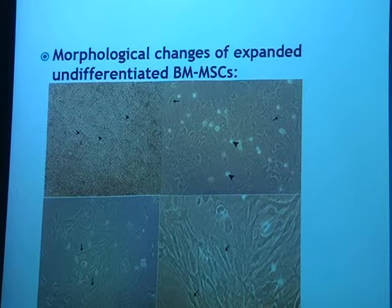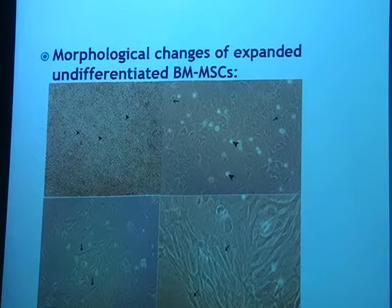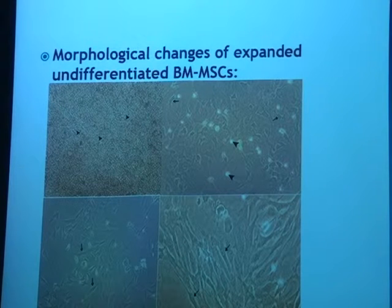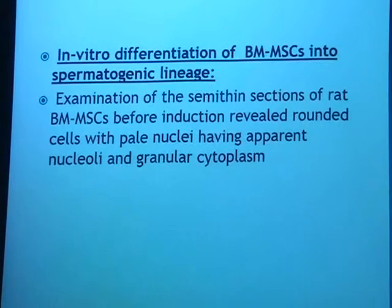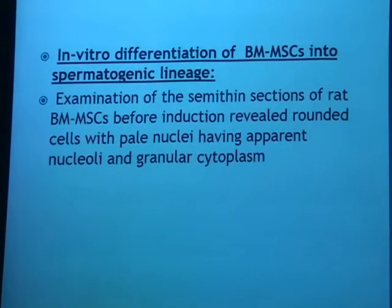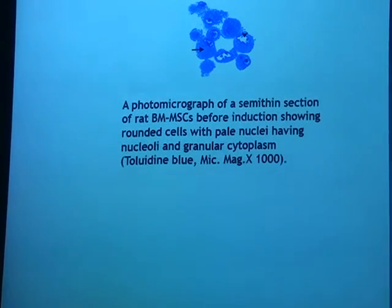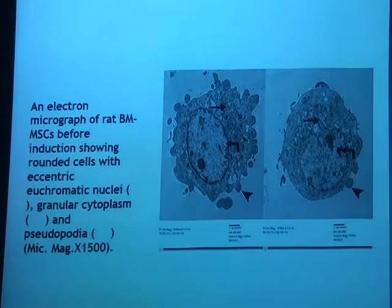These are the results showing morphological changes in differentiated bone marrow mesenchymal stem cells. First, mononuclear cells were observed at day zero, day three, day seven, and day 14. In vitro differentiation of mesenchymal stem cells into spermatogenic lineage: semi-thin sections stained by toluidine blue revealed rounded cells with pale nuclei, apparent nucleoli, and granular cytoplasm. The electron micrograph before induction showed rounded cells with eccentric euchromatin, granular cytoplasm, and pseudopodi.